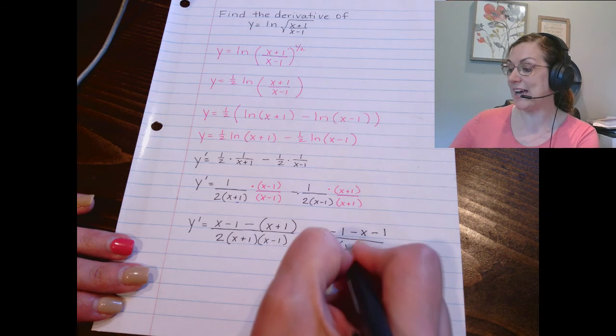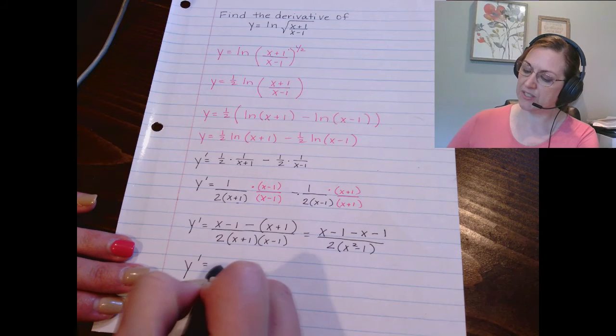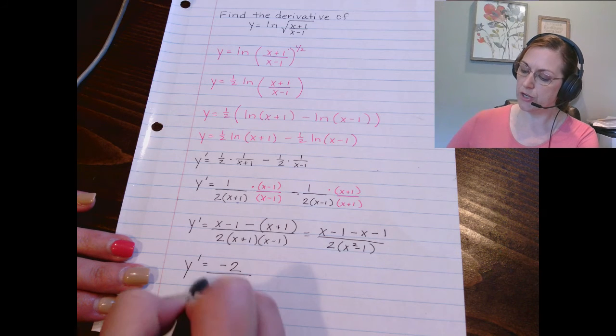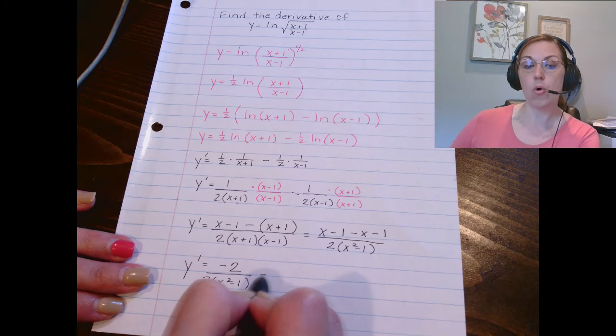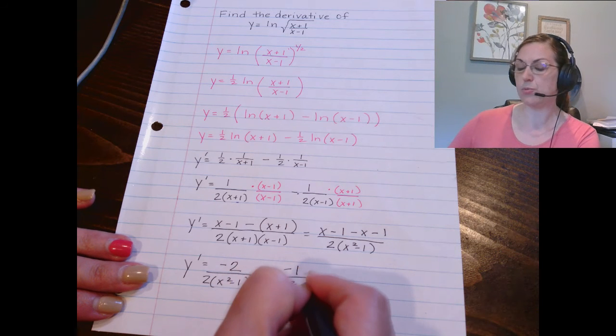That will give me x squared minus 1. And so y prime equals negative 2 over 2 times x squared minus 1 or negative 1 over x squared minus 1.